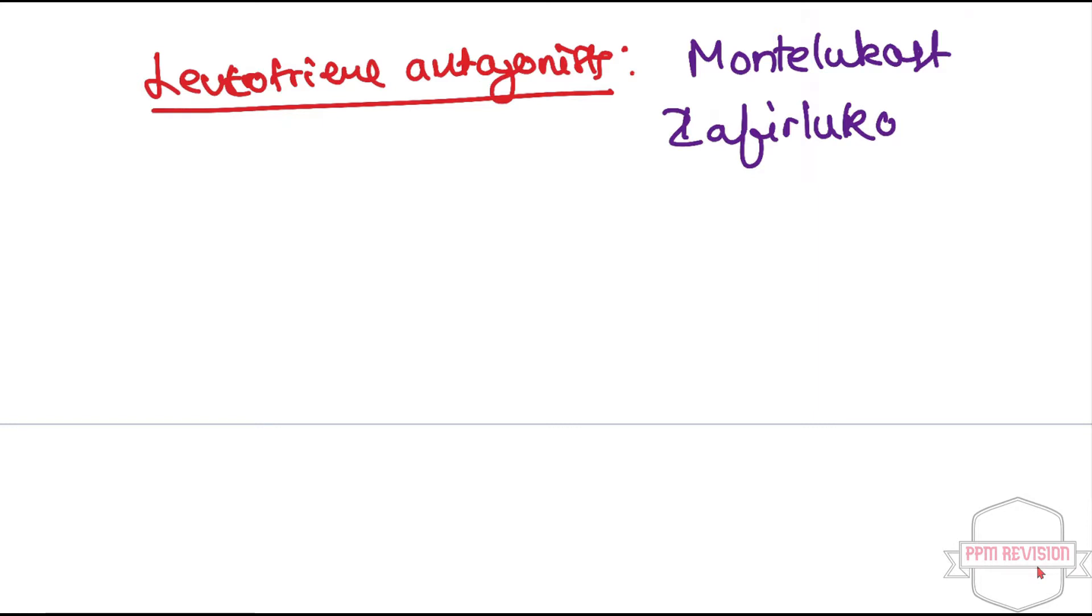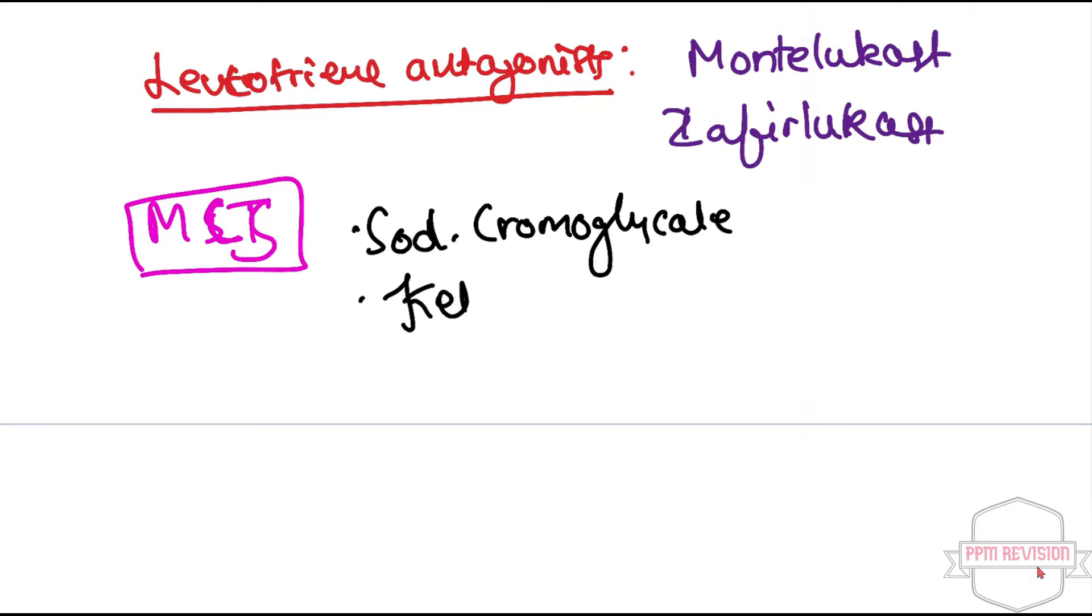Now moving on to another category. There is mast cell stabilizers, writing short as MCS. Under this there is sodium chromoglycate as well as ketotifen.